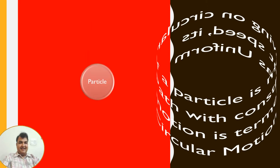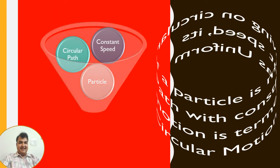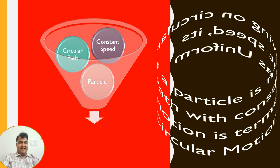If a particle is moving with constant speed along a circular path, this type of circular motion is called uniform circular motion.